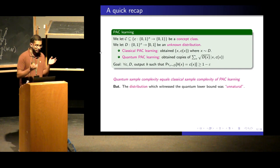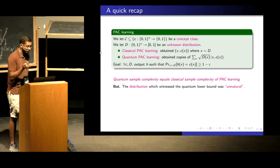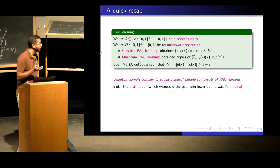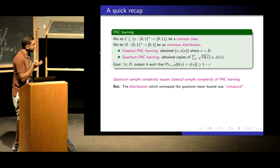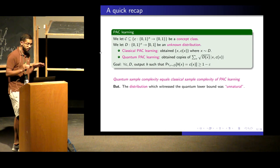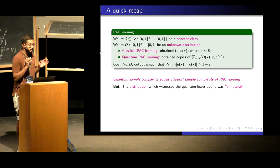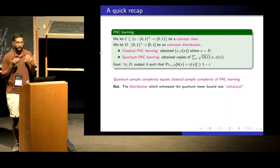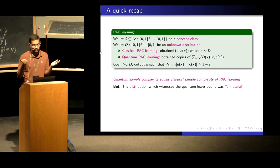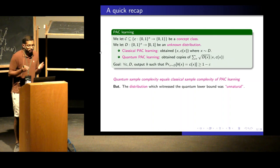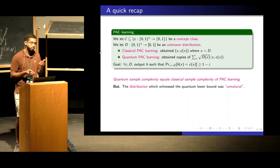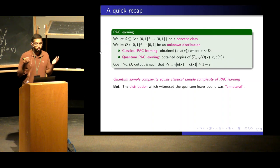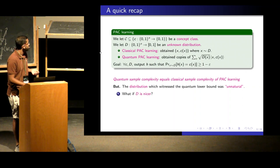I got many questions yesterday. One was that the distribution under which we proved the lower bound against quantum PAC learning was unnatural. Like, sure, you want to prove hardness, but the distribution you proved it under was just unnatural. Maybe that's not how nature works. What if D is nicer?